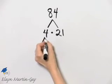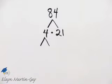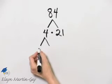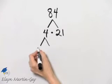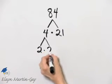What is the prime factorization of 4? Because remember, 4 is not a prime number, and we just keep going until we have all primes. 4 is 2 times 2.